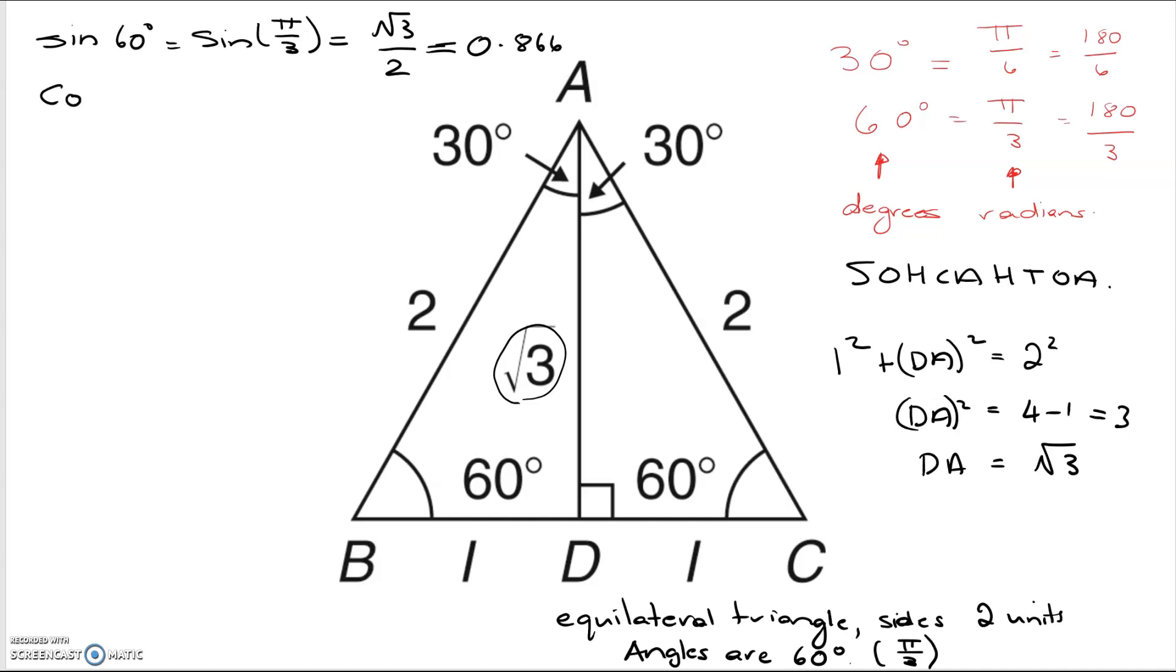If we look at cos 60 degrees, that's the same as sine pi by 3. Cosine is adjacent over hypotenuse. So in this case, the adjacent is 1 over 2, which is 0.5.